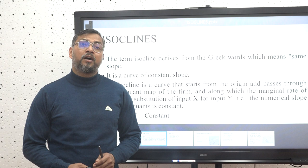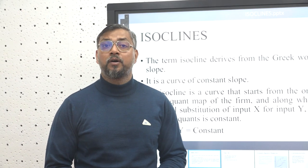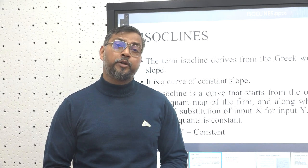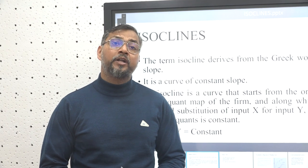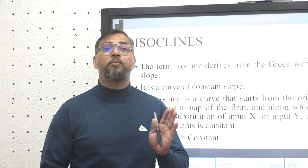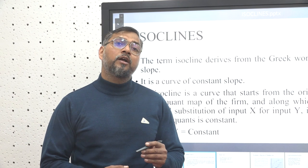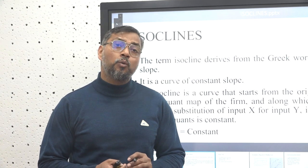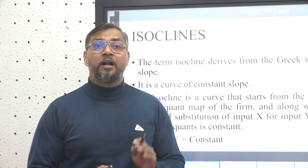An isocline is a curve that starts from the point of origin and passes through an isoquant map of a firm. The marginal rate of technical substitution between two inputs X and Y is constant — that is, throughout an isocline, the marginal rate of technical substitution is constant and the slope of the curve is constant. It joins all different points within a given graph where the slope is similar.